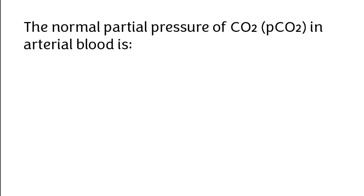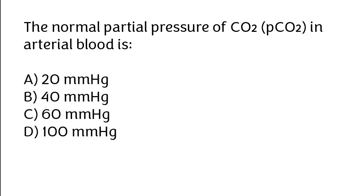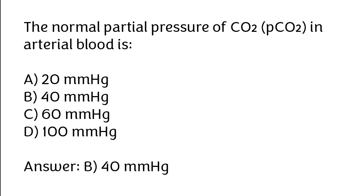The normal partial pressure of CO2 in arterial blood is: (A) 20 mmHg, (B) 40 mmHg, (C) 60 mmHg, (D) 100 mmHg. Correct answer is option B, 40 mmHg.